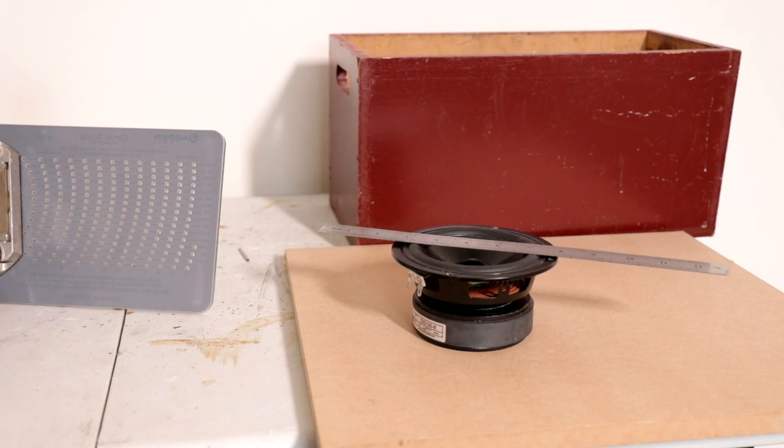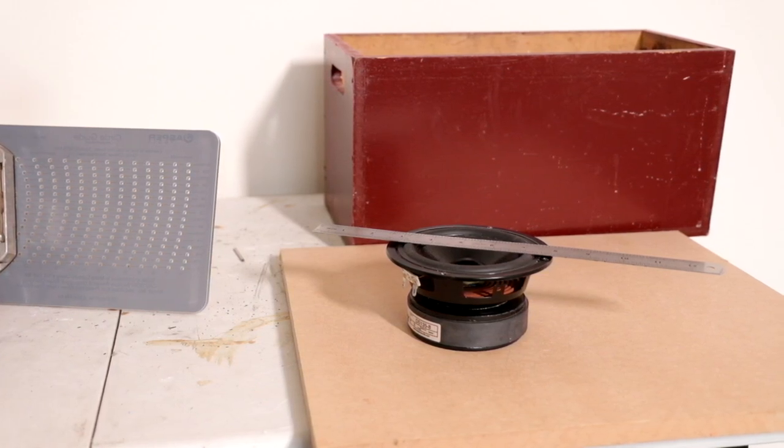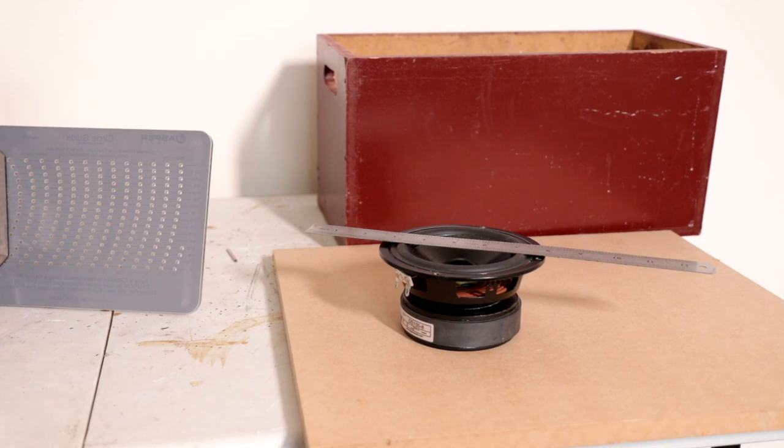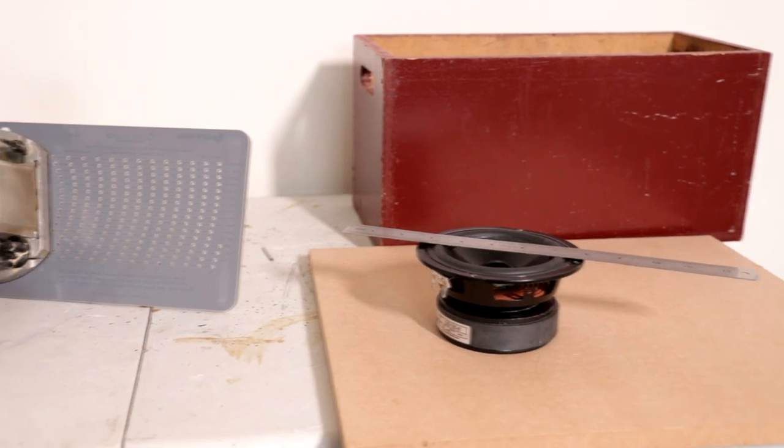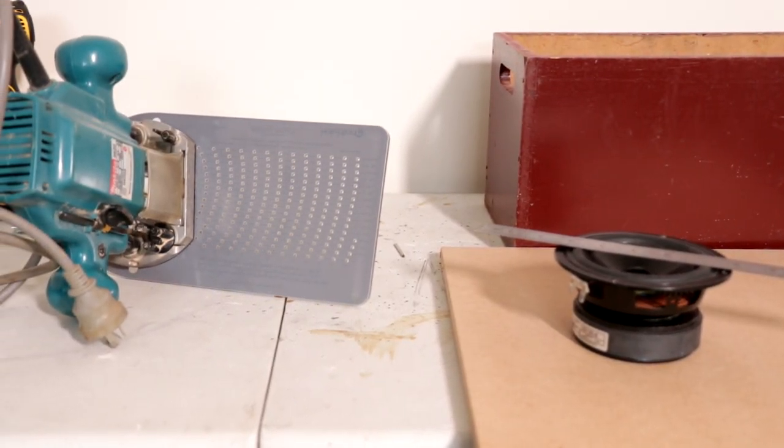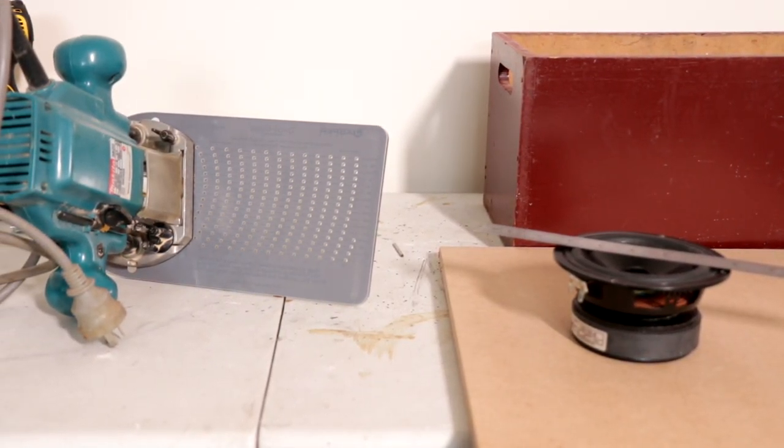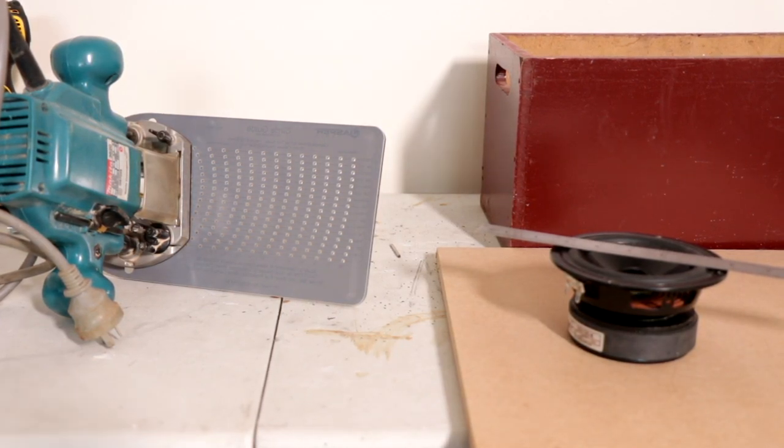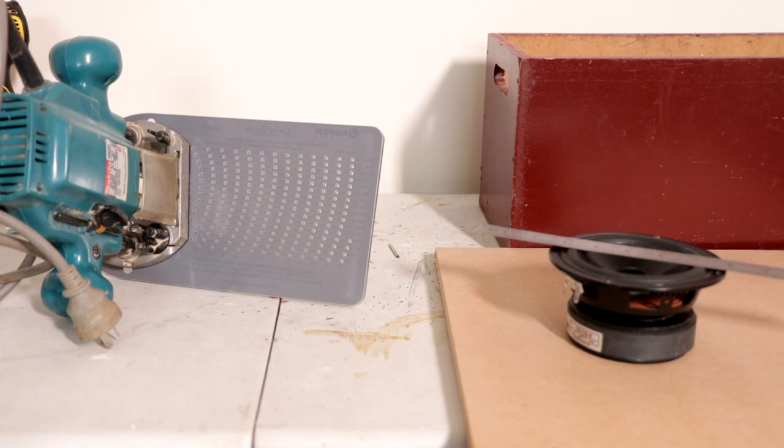Now, if you've seen 1, 2, 3, Toys' video on how to do this, he used a rebate bit on a router table, and I personally don't have a router table. So I was thinking of an alternative way to do it, and I figured I can actually do it with the circle jig that I have just here. It's just going to take a little bit more time and a little bit more trial and error to get it right. But let's quickly explain what I mean by using the circle jig to flush mount these speakers perfectly.